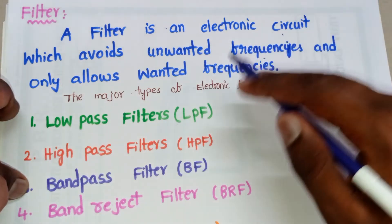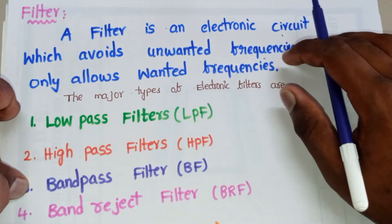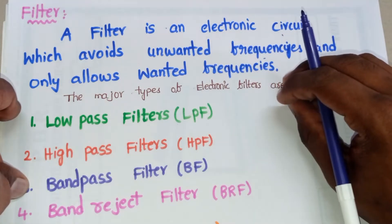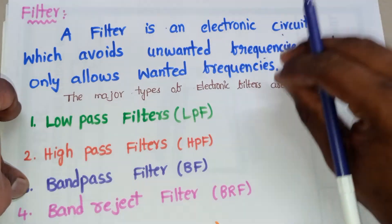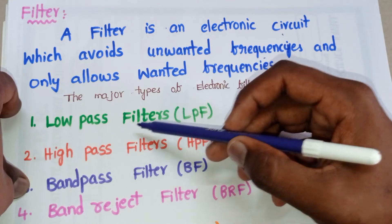A filter is an electronic circuit which avoids unwanted frequencies but allows wanted frequencies. This is about the definition of filters. In filters, we have five main types of filters. The first one is low pass filter, and the short form of low pass filter is LPF.